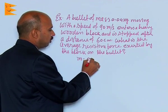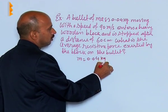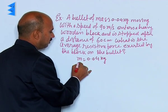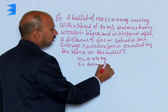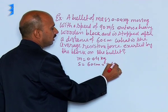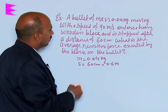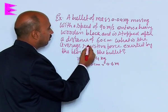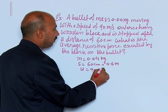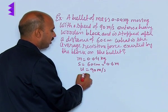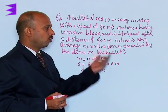Mass M is equal to 0.04 kg as given in the question. Distance S is equal to 60 centimeters, that is 0.6 meters, and initial velocity U is equal to 90 meters per second. Final velocity is 0 because the bullet is going to be stopped.